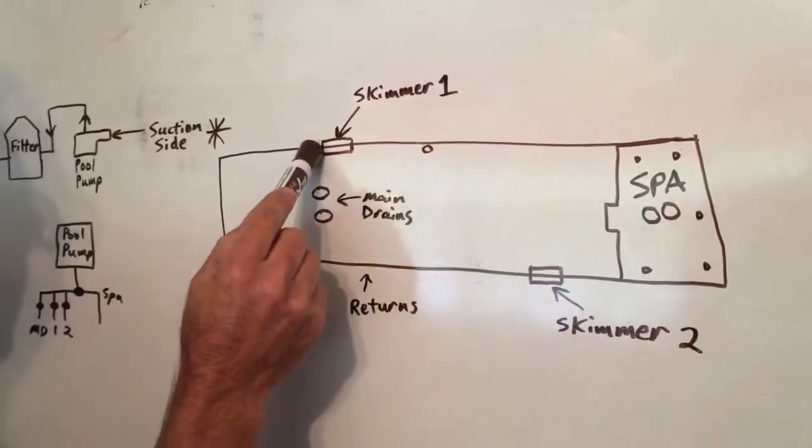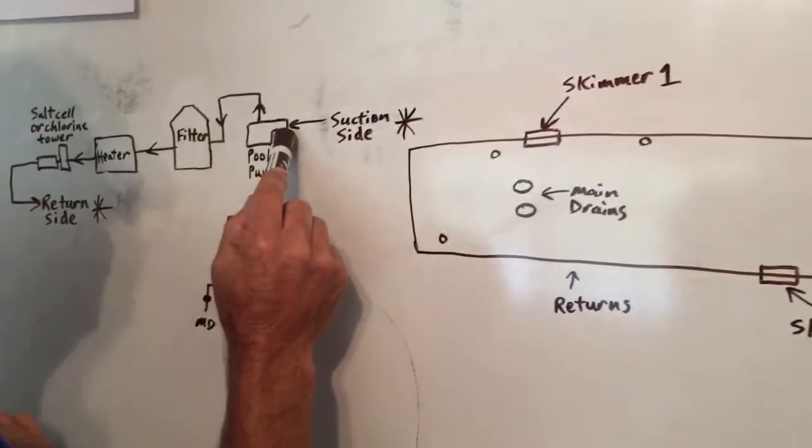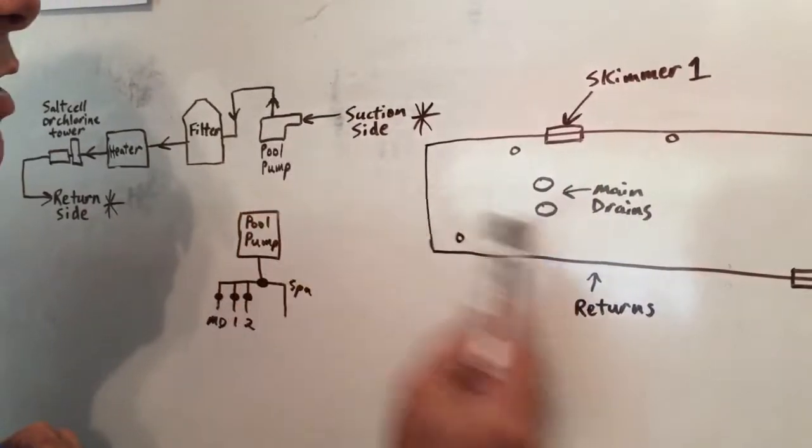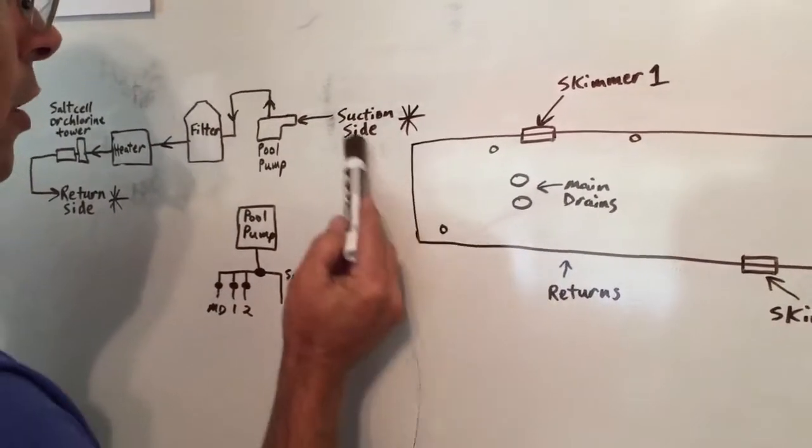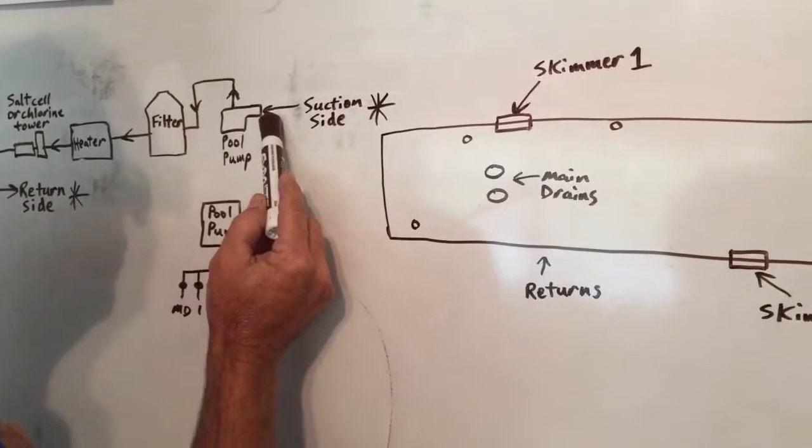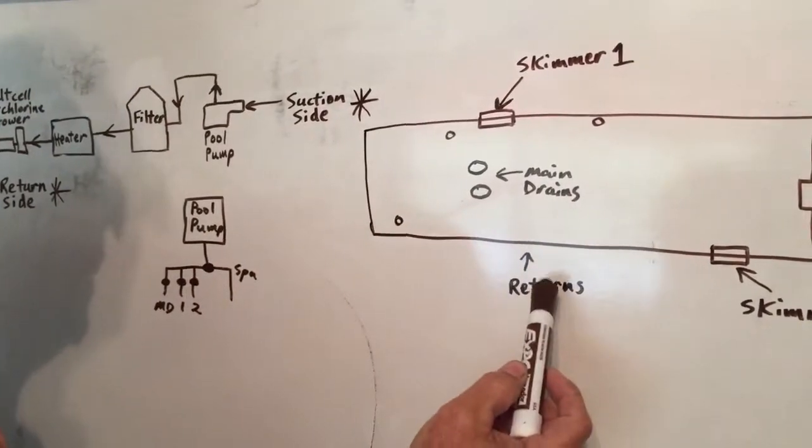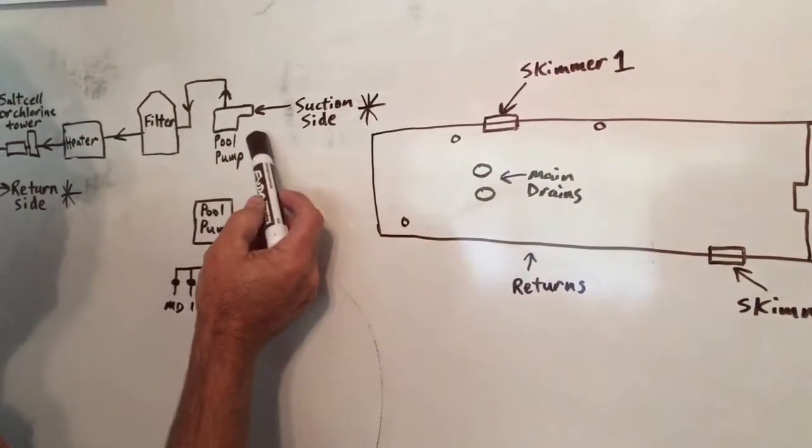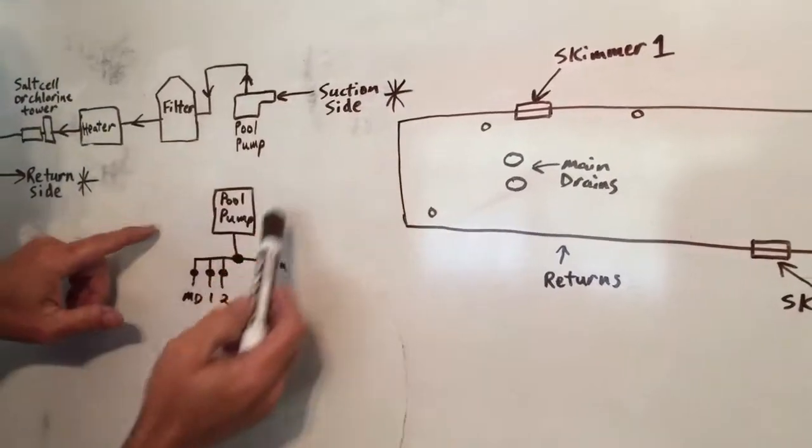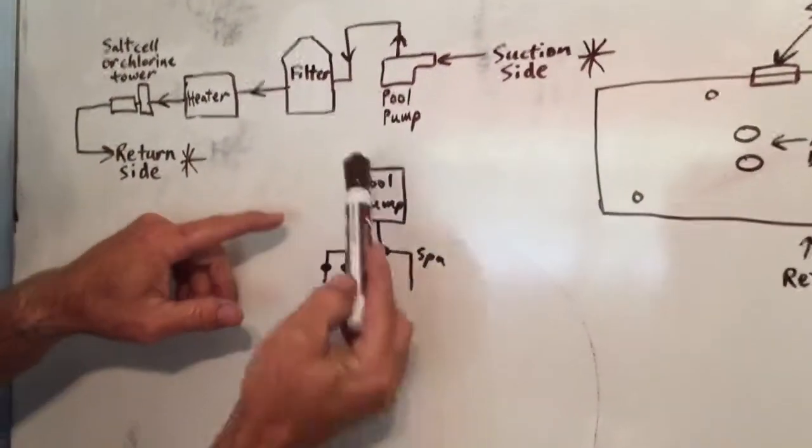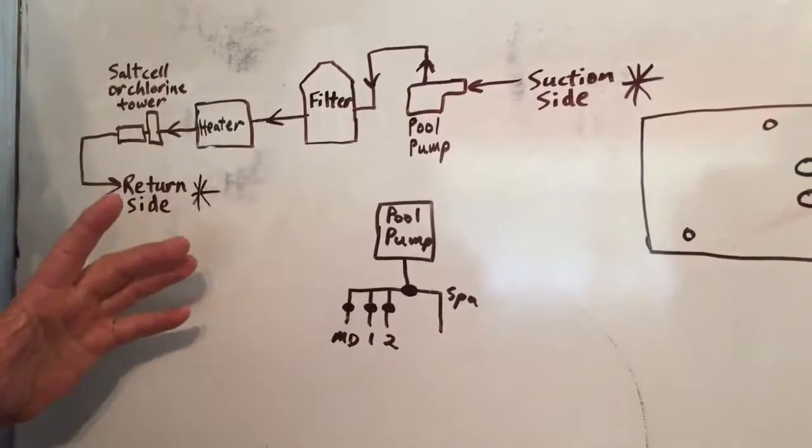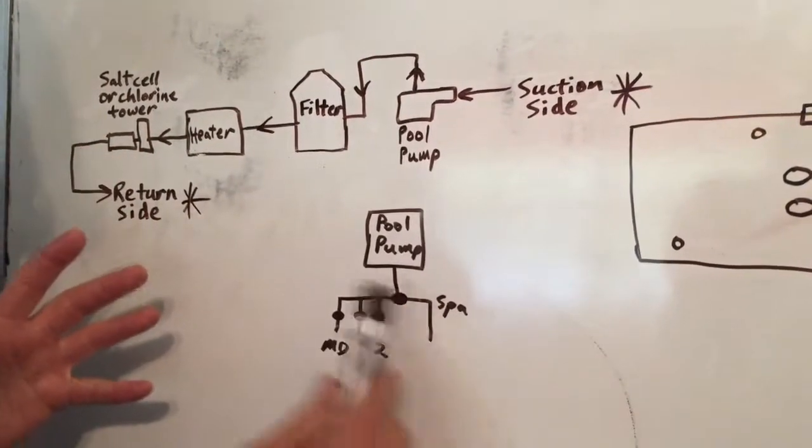Then you're usually going to have a pipe coming into the pool pump from skimmer one. You're going to have another pipe coming all the way over from skimmer two. And then you're going to have a pipe coming from the main drains coming into the front of the pump. So it would look something like this coming out of the ground. Usually that's the way it's plumbed now.